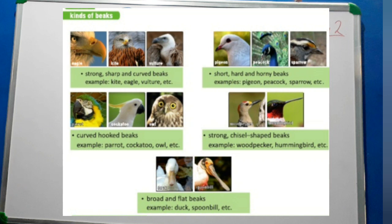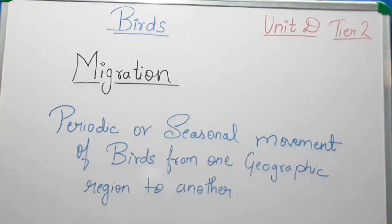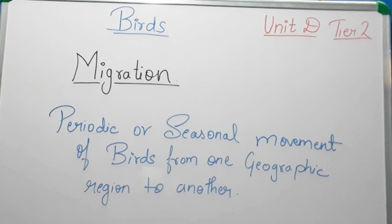Now let's see the process of migration. Migration is the periodic or seasonal movement of birds from one geographical region to another because of available food supplies. One bird famous for covering the longest distance is the Arctic tern, which migrates from its northern breeding grounds to the oceans around Antarctica and back, covering around 70,000 to 80,000 kilometres each year. Birds may travel hundreds or thousands of miles during migration.